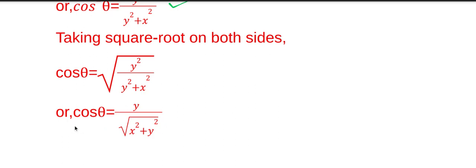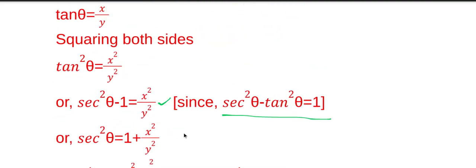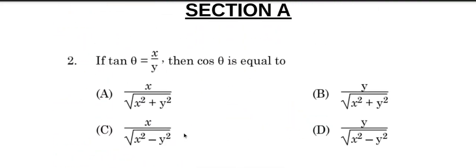So cos theta is equal to y by root over x square plus y square. Hence option B, cos theta equals y by root over x square plus y square, is the correct answer.